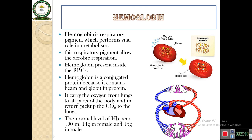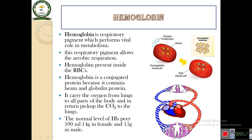The normal level of hemoglobin per 100 milliliters in females is 14 grams and in males is 15 grams.